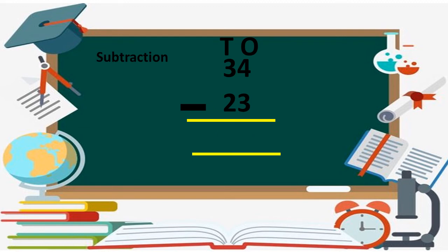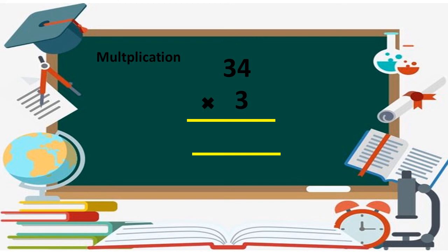Let me do subtraction with whole numbers. Here again I have two-digit numbers, 34 and 23. We do subtraction of the ones-side numbers first, then subtract the tens-side numbers. So 4 minus 3 is 1 and 3 minus 2 is 1. The difference of 34 and 23 is 11.